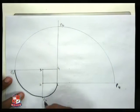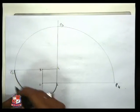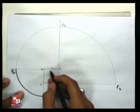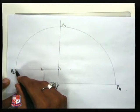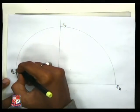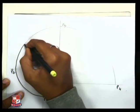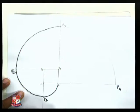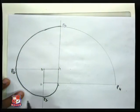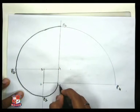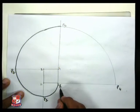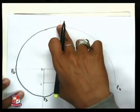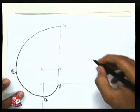We have obtained point number P2. Take 4 as center, 4P2 as radius, and mark a continuous arc. Then take 1 as center, 1P3 as radius, and mark in a continuous arc.